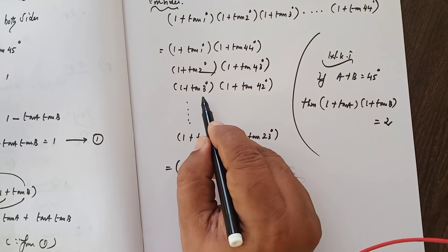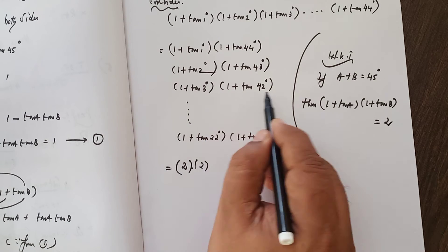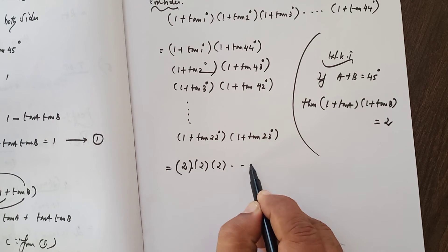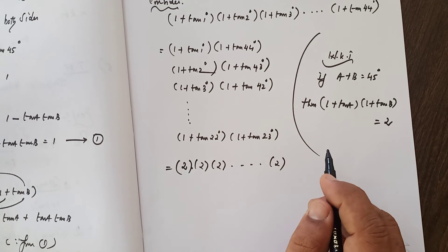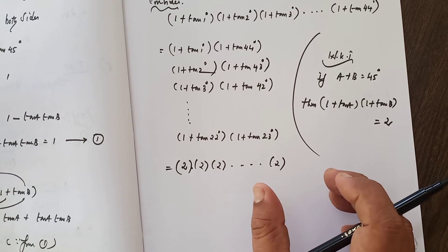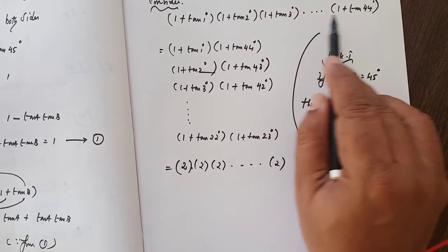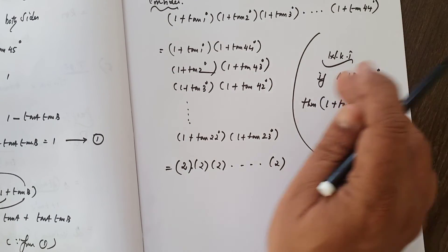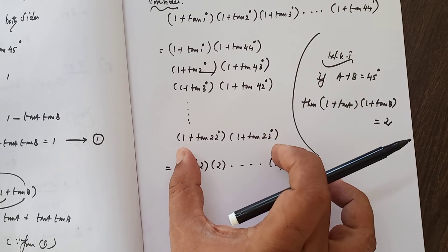For every pair — 2°+43°=45°, 3°+42°=45°, and so on — each product equals 2. The last pair also gives 2. There are 44 expressions in total, and after pairing they give 22 pairs.